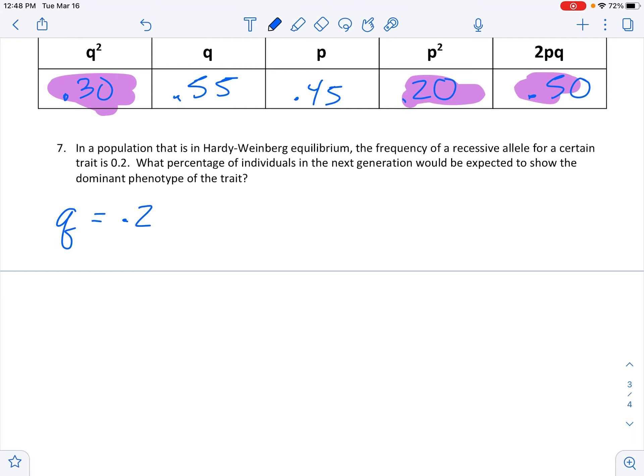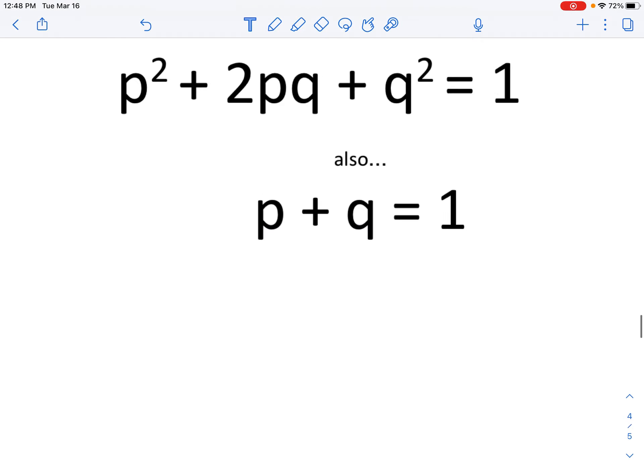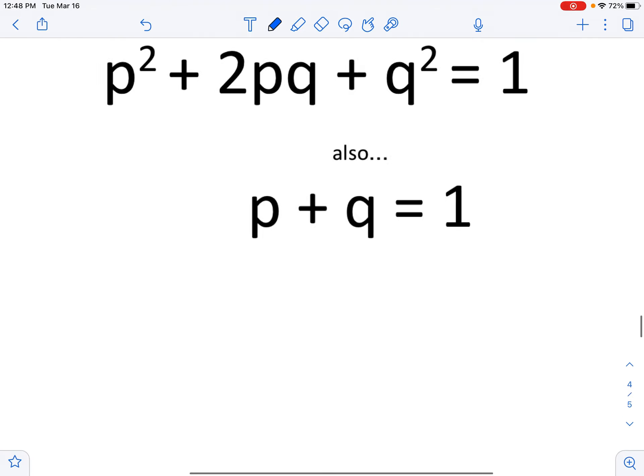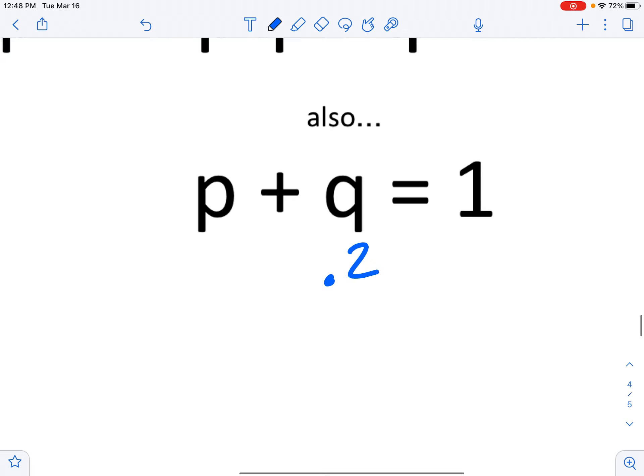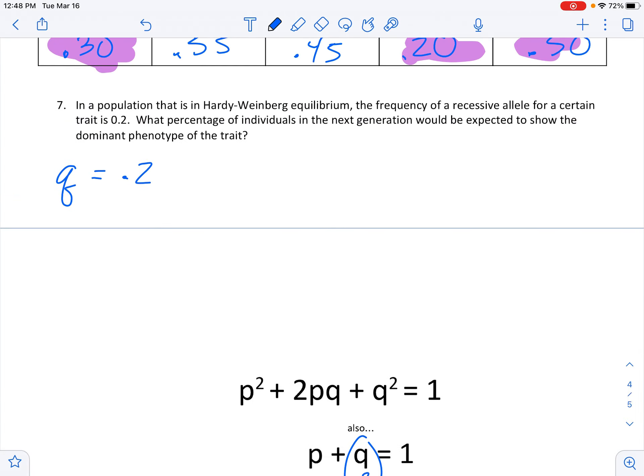Okay. So now, let me paste this again here. Now we're looking at just q being 0.2. So we're starting in a different spot here. This is 0.2. What percentage of individuals in the next generation would be expected to show the dominant phenotype?